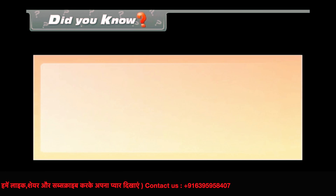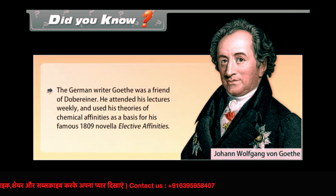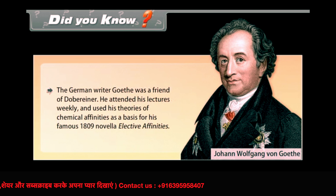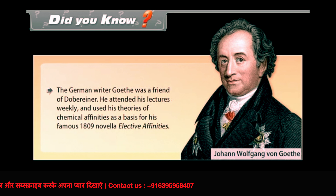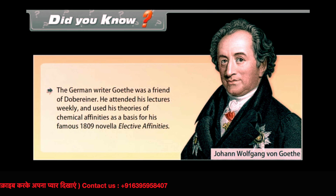Did you know the German writer Goethe was a friend of Dobereiner? He attended his lectures weekly and used his theories of chemical affinities as a basis for his famous 1809 novella, Elective Affinities.